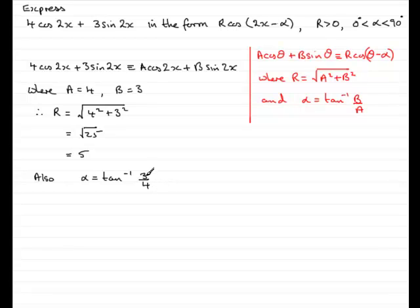Make sure your calculator now is in degrees mode. So, if we do that, you should find that you get 36.8698, and so on. And we're asked to give alpha to two decimal places, so, that's going to be 36.87 degrees. We'll just put in there to 2dp.